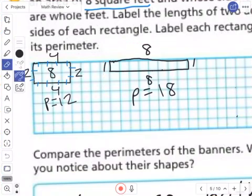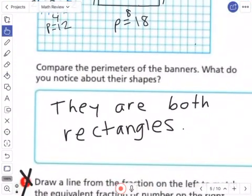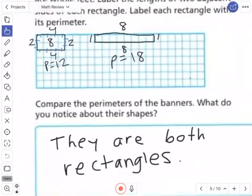And then for my thinking down below, I just said compare the perimeters. Well, I said, what do you notice about their shapes? I just note they're both rectangles. One is kind of longer than the other.